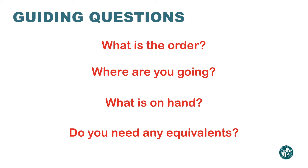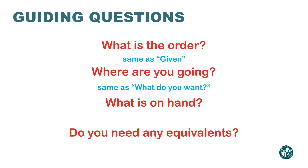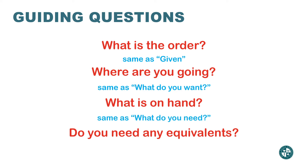For example, 'What is the order?' is the same as asking 'What is given?' 'Where are you going?' is the same as 'What do you want?' 'What is on hand?' and 'Do you need any equivalence?' are the same kind of question as 'What do you need?' It's the same process — the questions in red are just focused on the nursing setting to help you set up the dimensional analysis.